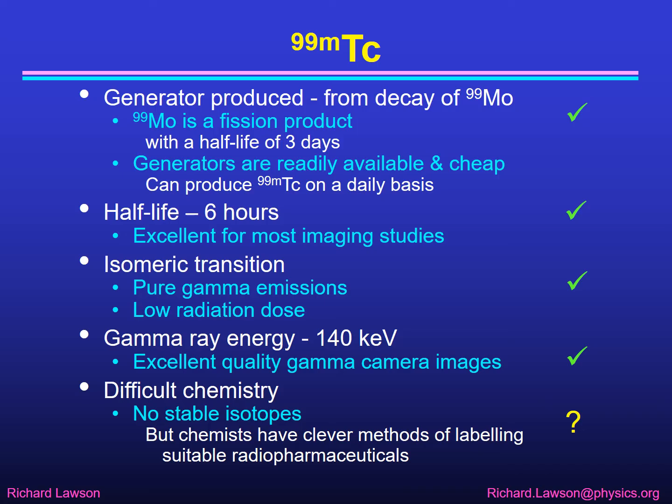The only slight difficulty with technetium-99m is that it has difficult chemistry because there are no stable isotopes of technetium. Technetium is one of the very few elements that has no stable isotopes at all, so it doesn't occur naturally in nature. Therefore you can't take an existing molecule and replace the stable technetium with radioactive technetium-99m — there is no stable technetium in any existing molecules. So chemists have had to develop clever methods of labelling suitable radiopharmaceuticals by tagging on technetium atoms where they don't really belong. Fortunately nowadays we have a variety of kits available where you can just add some technetium solution to a vial and it becomes labelled, producing a pharmaceutical labelled with technetium-99m. As a result, technetium-99m is the radionuclide used in the vast majority of nuclear medicine imaging studies nowadays.